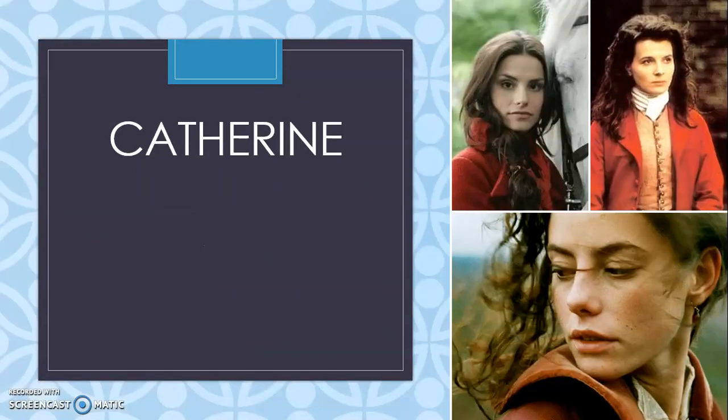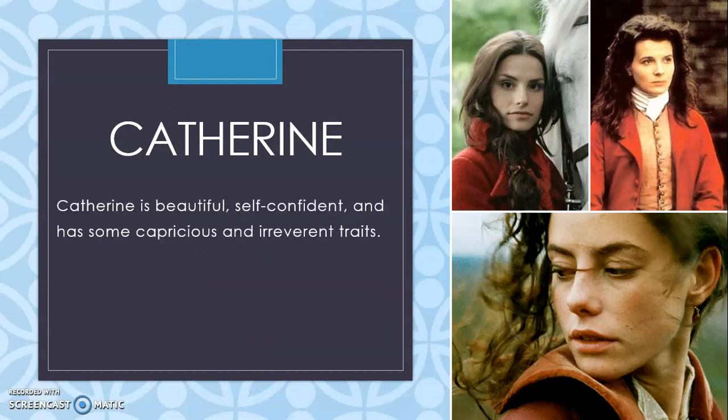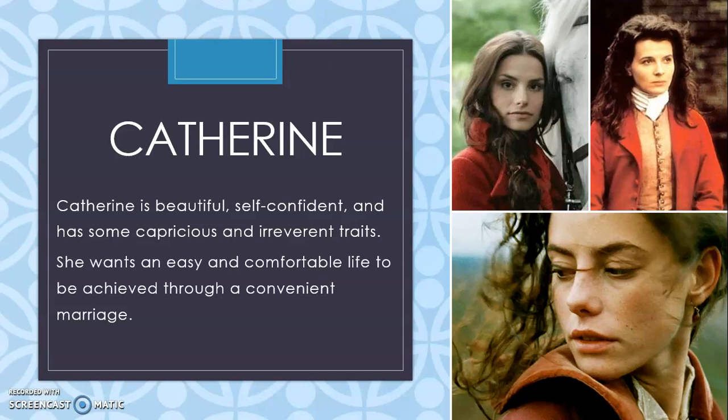At the beginning they consider themselves brother and sister, but then the relation develops. Catherine is beautiful, self-confident, quite capricious, with irreverent traits, and very intelligent. She wants an easy and comfortable life. She already belongs to a wealthy family and she wants to maintain that level of wealth, so her intention is to secure a good, rich marriage.